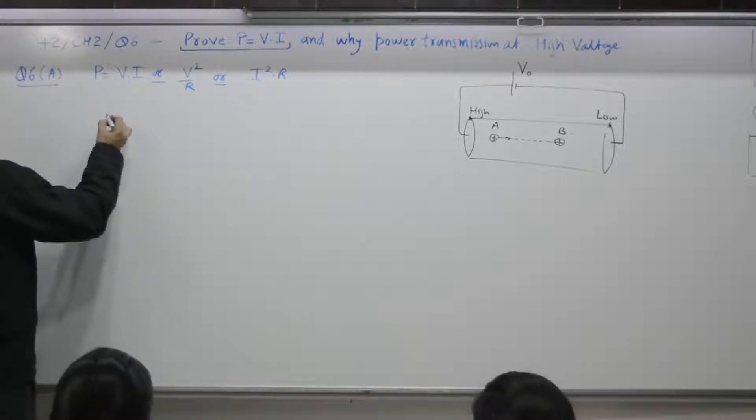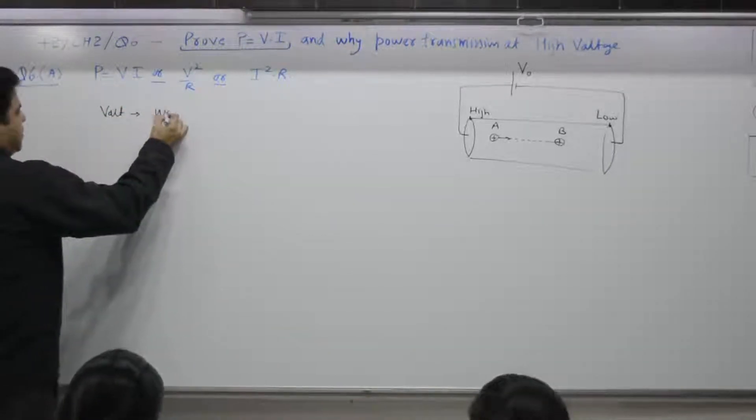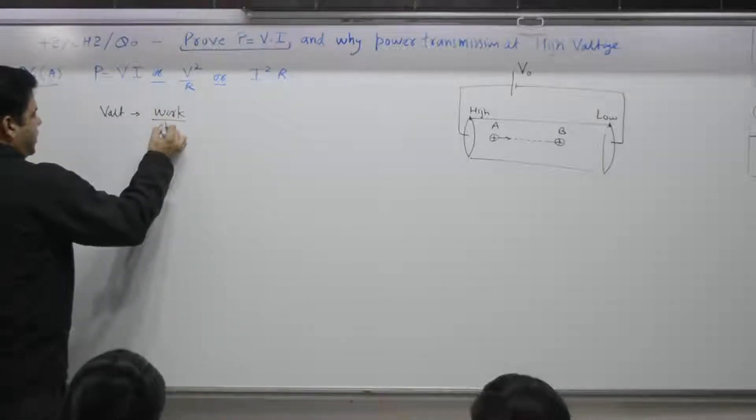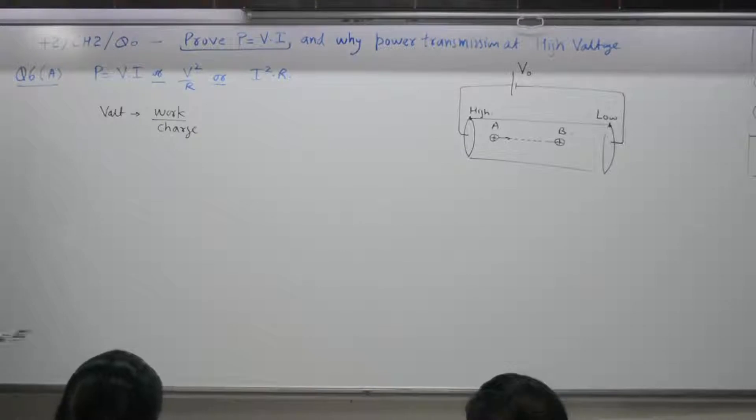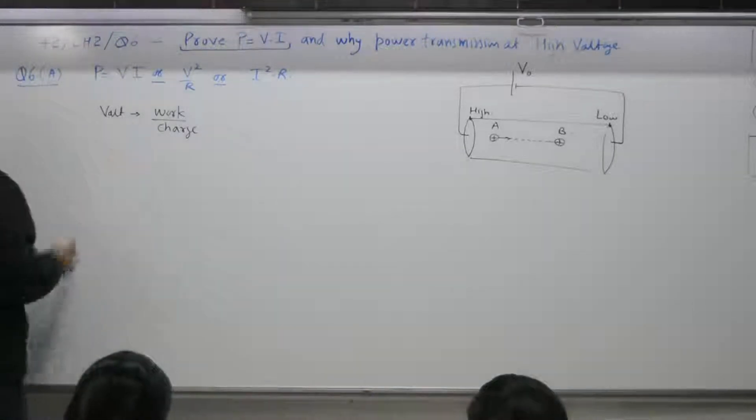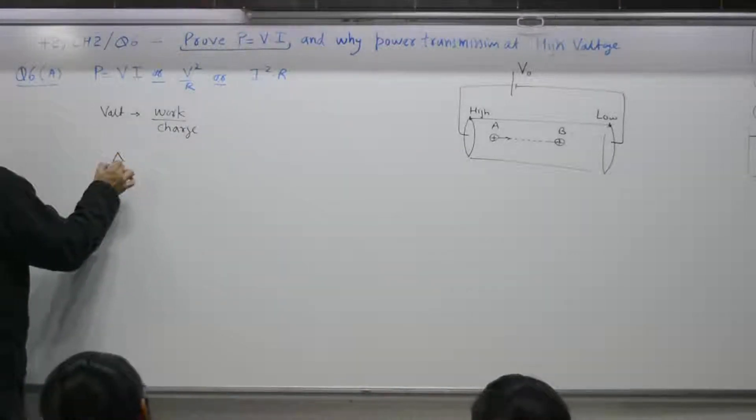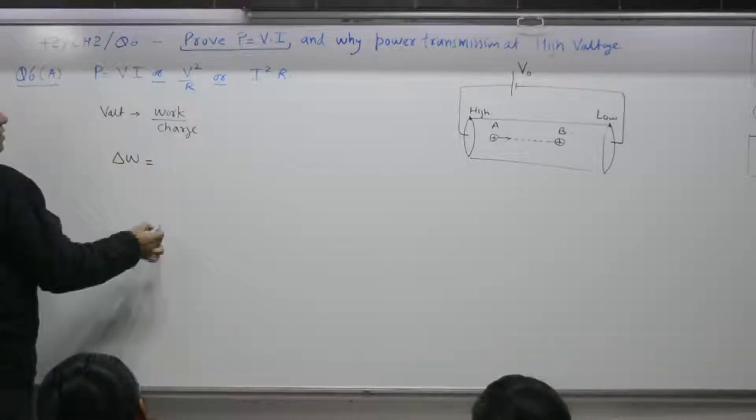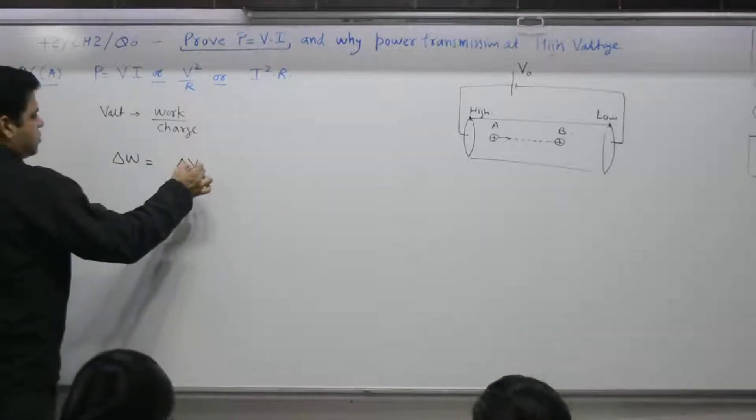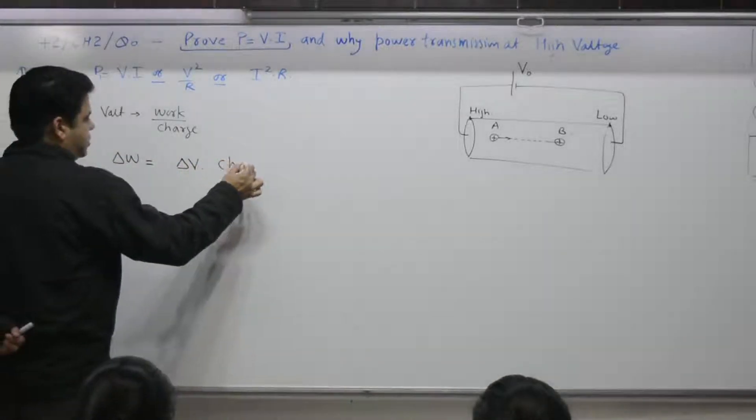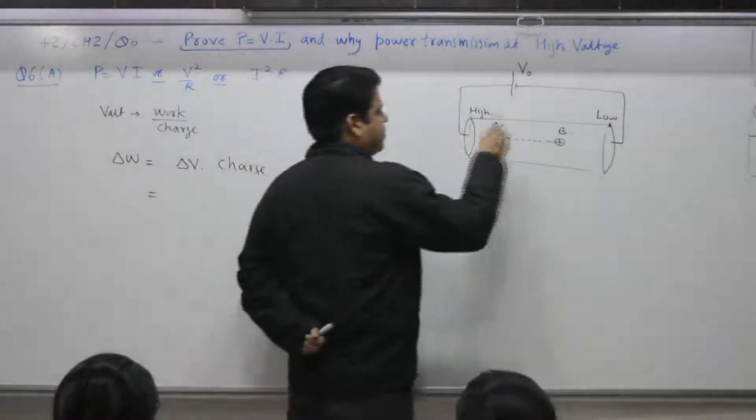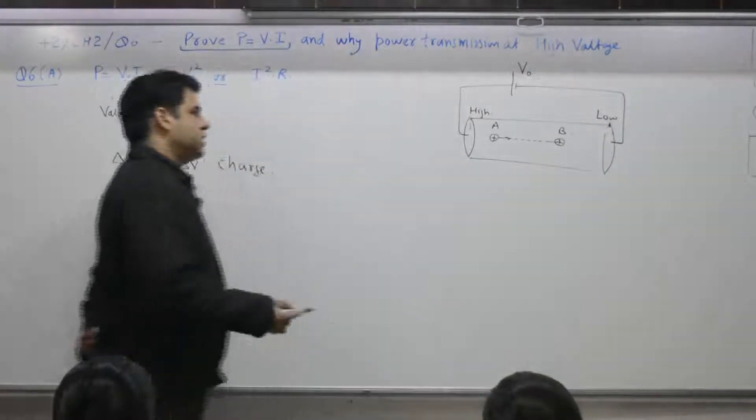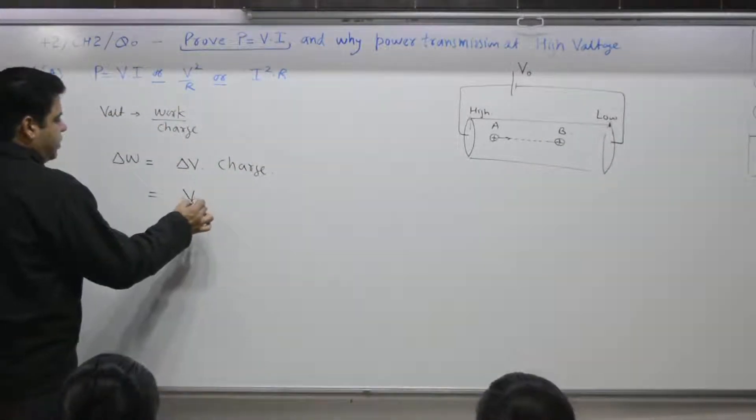Definition voltage is what? Work done per unit charge. So work done is equal to what? Work done is equal to voltage into charge. Small work done is equal to potential difference into charge. Potential difference between these two points. Between this point and this point or between these two points is V naught.